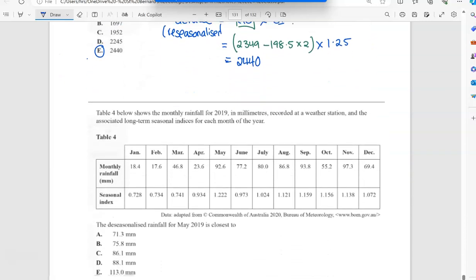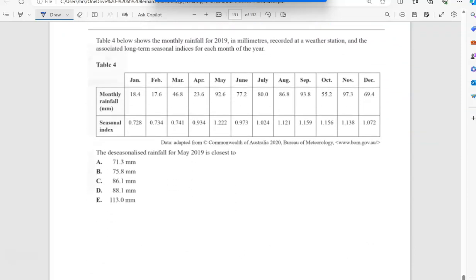You just got to be really careful. They want the actual and they gave you a formula to find the de-seasonalized. This next one wants the de-seasonalized rainfall for May 2019. So here, if I just write the formula for de-seasonalized, that's actual divided by seasonal index. So actual rainfall for May, this is pretty easy, this question, everything's standard, 92.4 divided by 1.22, so I end up with 75.8.